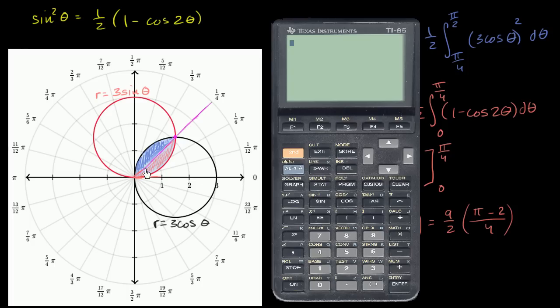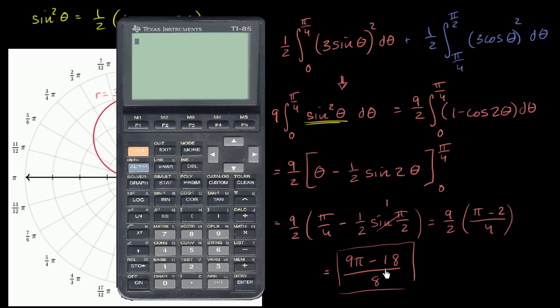In the last video, we tried to find the area of the region, this combined area between the blue and orange, the overlap between these two circles, and we came up with nine pi minus 18, all of that over eight.